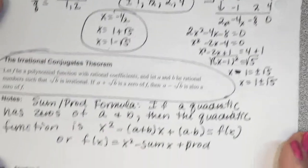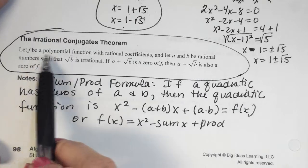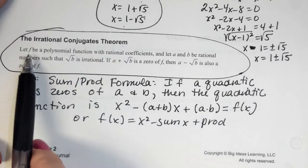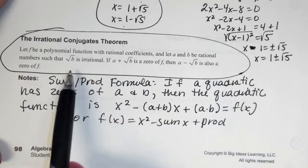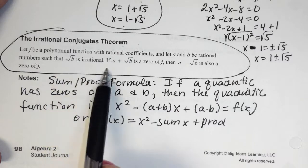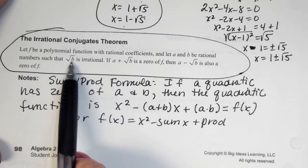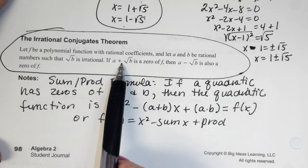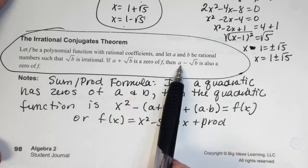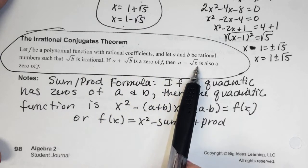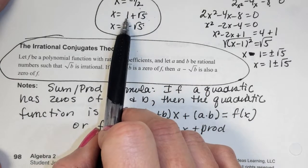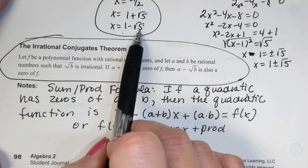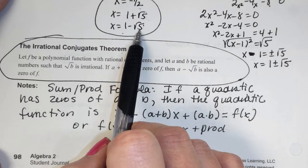The irrational conjugate theorem states: if we have a function and √b is irrational, then if a + √b is a zero, then a - √b is also a zero. We just saw that — 1 + √5 is a zero and so is its conjugate 1 - √5.